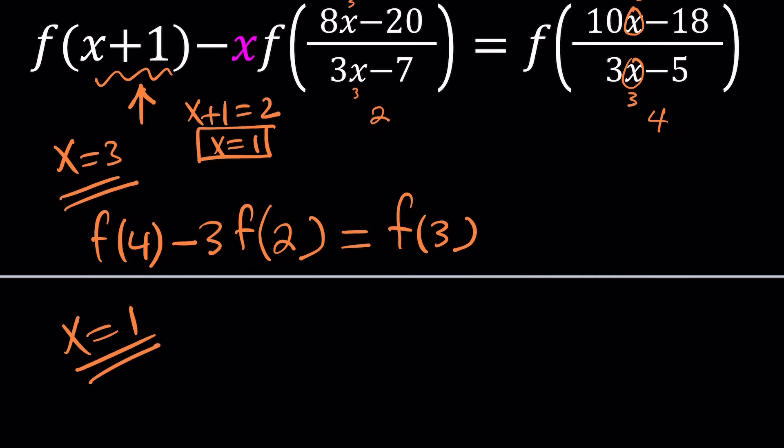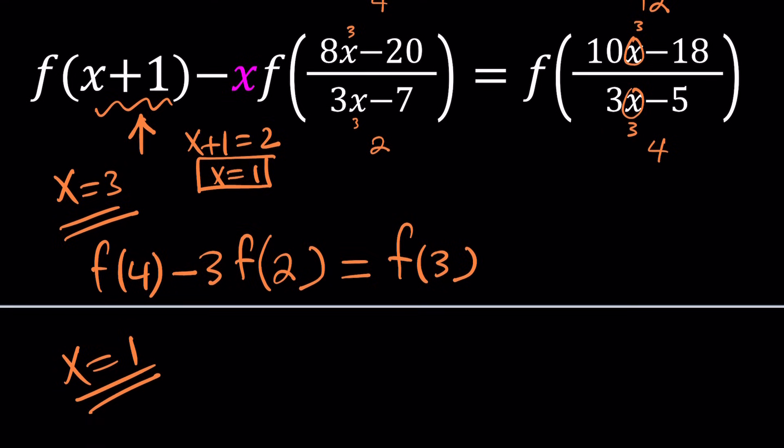So the next step is replacing x with 1 everywhere. Again, I keep repeating, you have to do it everywhere. If you replace x with 1, you get f(2) minus 1 times f of, let's find out. That should be kind of easy. 8 times 1, maybe I should erase and start over. This is 8 times 1 minus 20, that is negative 12. And then 3 times 1 minus 7, that is negative 4. Negative 12 divided by negative 4 is a positive 3. How nice, right?